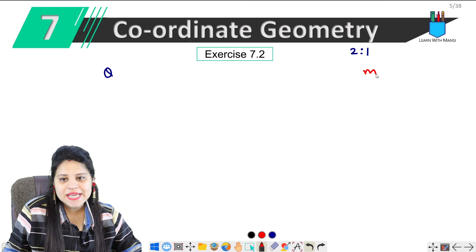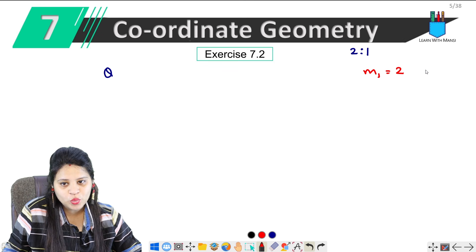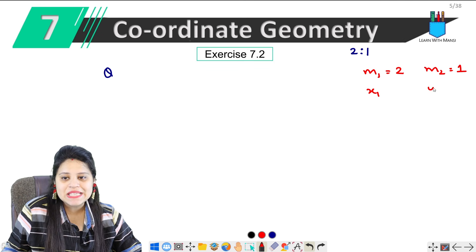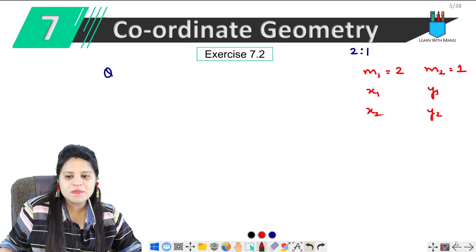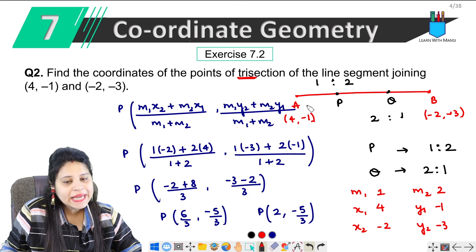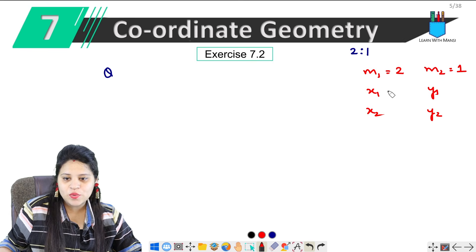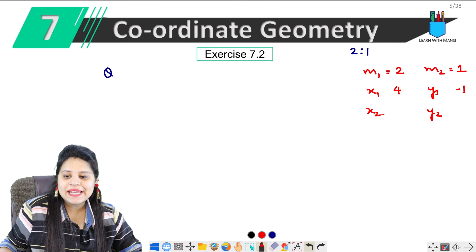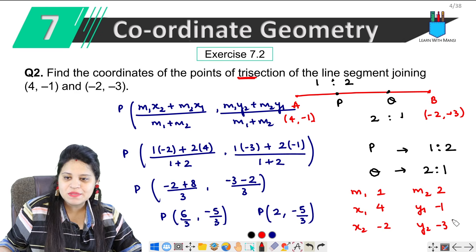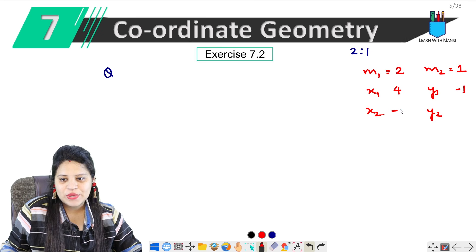Now with this ratio, we will find that m1, 2, and m2 value, 1. So we will write x1, y1, and x2, y2. A's coordinates, 4, -1, and x2, y2 means B coordinates, -2, -3.